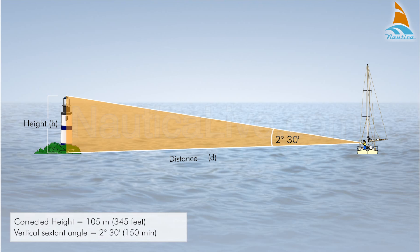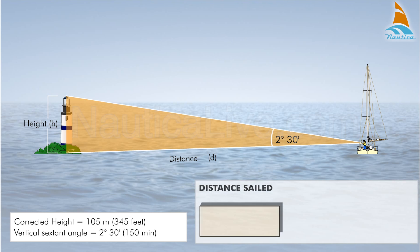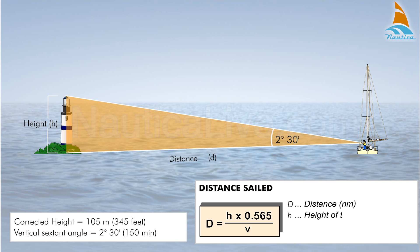Knowing the corrected height and the corrected vertical sextant angle of the lighthouse, calculate the distance using the formula D = H × 0.565 / V, where D is the distance in nautical miles and H is the height of the lighthouse in feet.